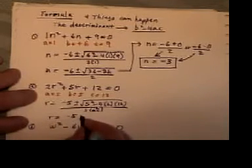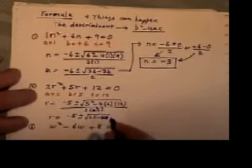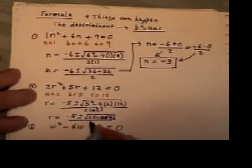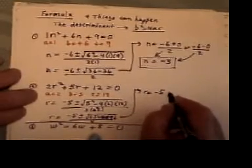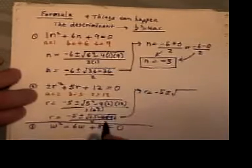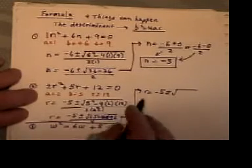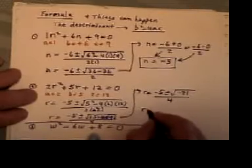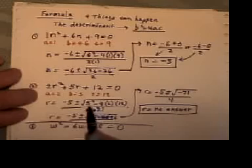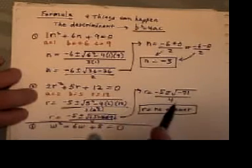So this gives me the opposite of 5, plus or minus the square root of 25, minus 96, all over 4. Now what happens in this situation is when you go to take your square root, you find out that it's the square root of a negative number. 25 minus 96 is minus 71. And because you're taking the square root of a negative number, there is no answer. So when you do the b squared minus 4ac part and you get a negative number, then there's no answer.